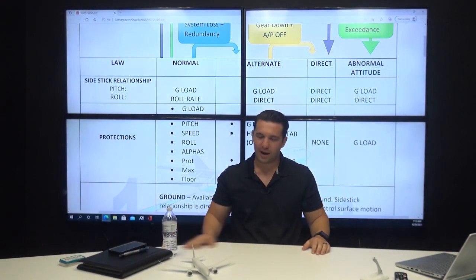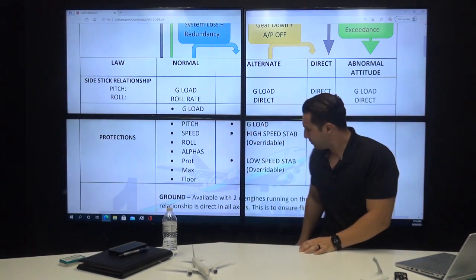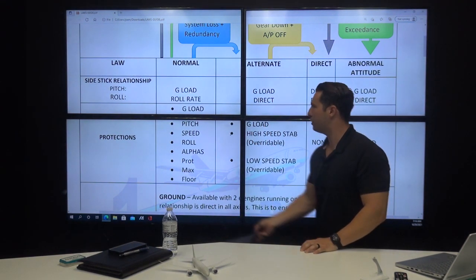All right, so as long as you have that, you'll have alpha floor available, all right? So that's, let's see, normal law, quick review one more time.